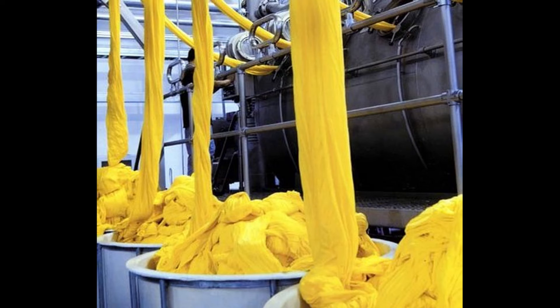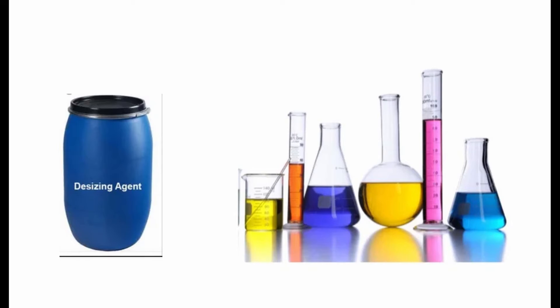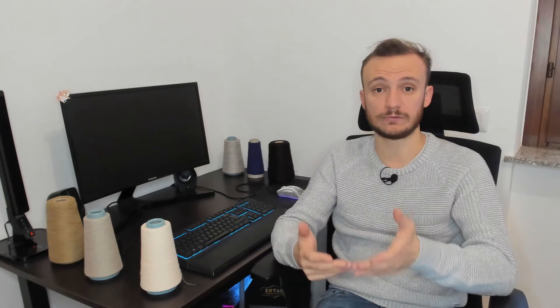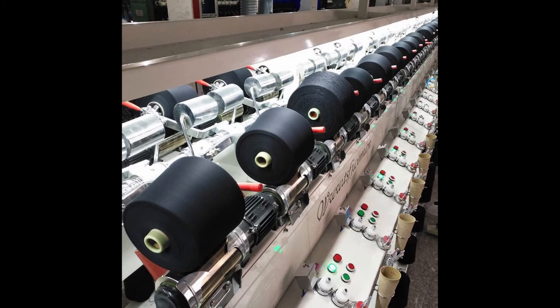Before dyeing it's very important to perform desizing through some desizing agents to remove these paraffins and oils from the fabric or from the yarns, otherwise the dye stuff will not penetrate deep into the fiber. Vice versa, after dyeing it is very important to re-oil or re-wax your yarn or fabric to give it better mechanical properties. That's why waxing and oiling are performed both before and after dyeing.